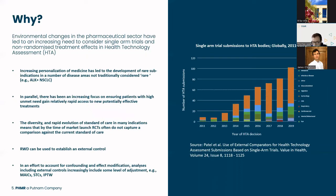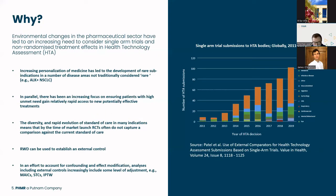If another randomised controlled trial comparing the standard of care to the same control group isn't available, anchored ITCs won't be possible. The figure on the right shows the increasing prevalence of single-arm trials submitted to HTA bodies globally. Real-world data can be used to establish an external control group; however, external control groups raise concerns regarding bias due to lack of standardised treatment protocols, outcome definitions, incomplete data on key confounders, and generally lower data quality.